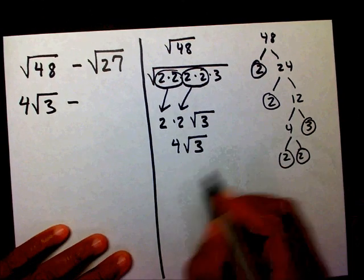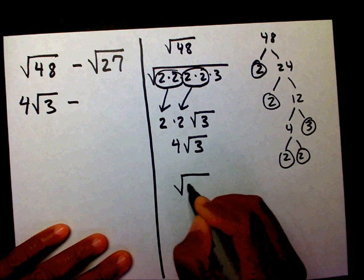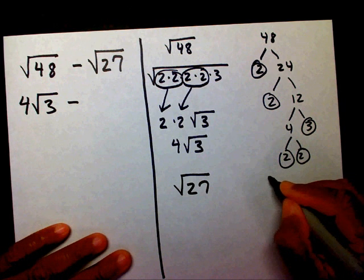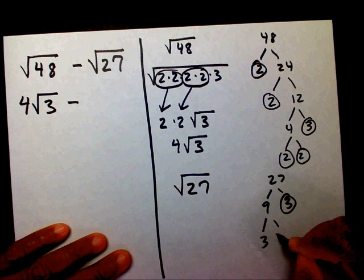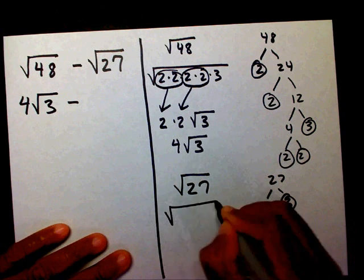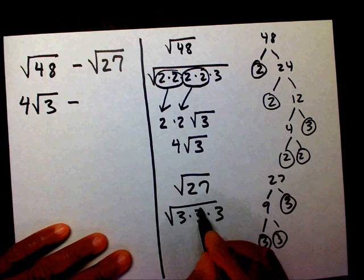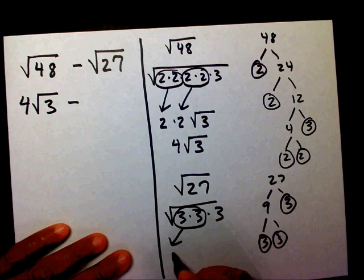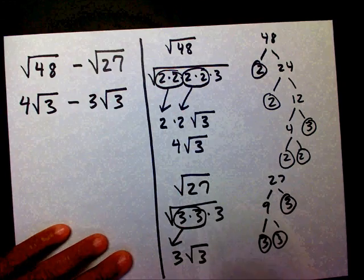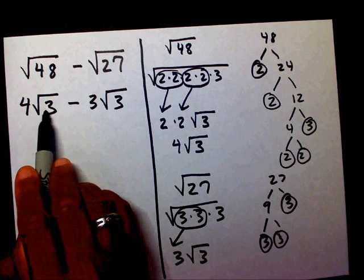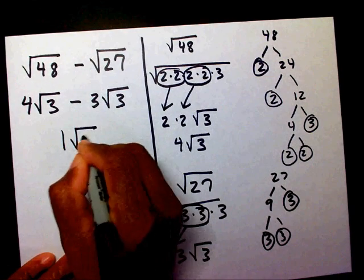Now for radical 27: the factor tree gives 9 and 3, then 3 and 3, so 3 times 3 times 3 inside the radical. The 3 times 3 is a perfect square, giving 3 on the outside and 3 inside — that's 3 radical 3. So: 4 radical 3 minus 3 radical 3 equals 1 radical 3, or just radical 3.